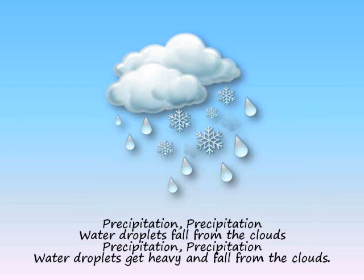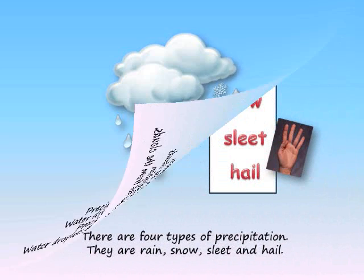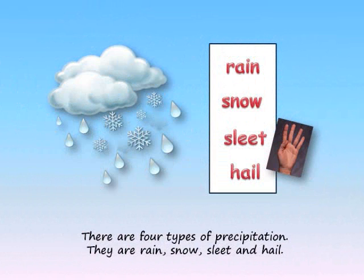Precipitation! Precipitation! Water droplets fall from the clouds. Water droplets get heavy and fall from the clouds. There are four types of precipitation. They are rain, snow, sleet, and hail.